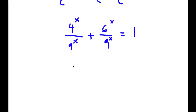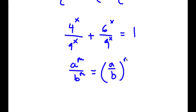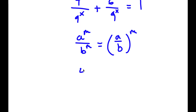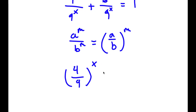Now if I have something in the form a to the power of m over b to the power of m, this can be written as a over b to the power of m. I'm going to use this property for both 4 to the power of x over 9 to the power of x, and 6 to the power of x over 9 to the power of x. So now I'll have 4 over 9 to the power of x plus 6 over 9 to the power of x.